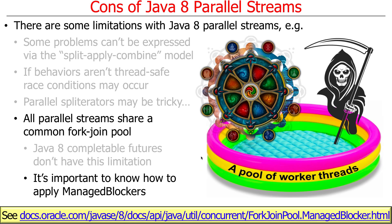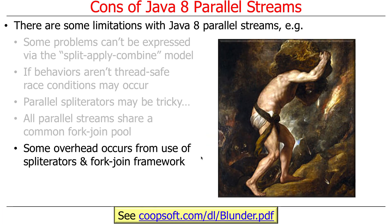Because of the shared common pool for parallel streams, it's a good idea to learn how to use managed blockers — the things that manage the lifecycle of threads, increasing the pool size if you're going to be blocking, and removing threads if they've been idle too long. There will be some overhead from using spliterators, from the fork-join framework, and from joining everything back together at the end. You have to understand whether your application can tolerate that overhead, and if N times Q is big enough, it just doesn't matter. There's a funny article that goes on about how the fork-join framework is terrible.